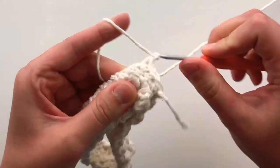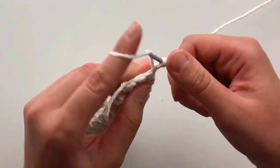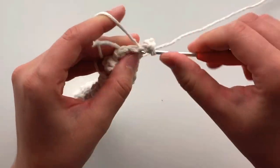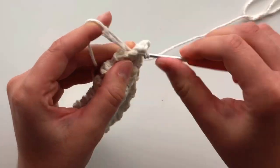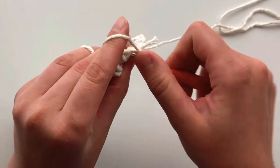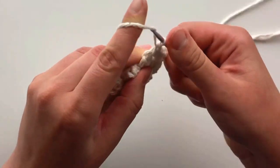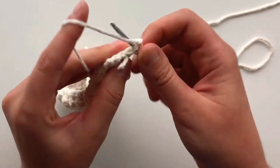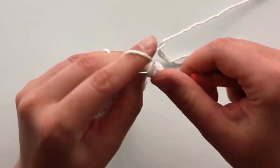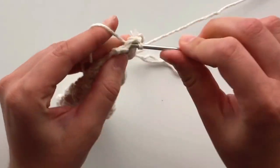Chain 1 and turn. And we are going to make 7 more rows for a total of 8 single crocheted rows, including our very first one where we single crocheted the top and bottom together. Pause this video and meet me back when you're finished with your 8th row.